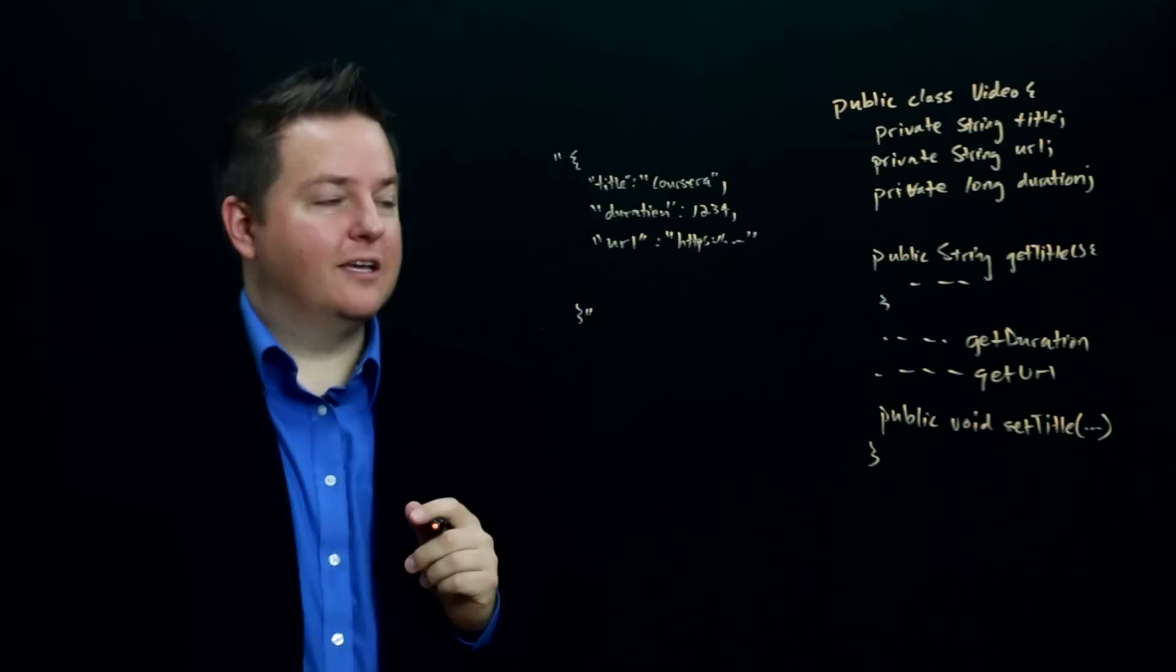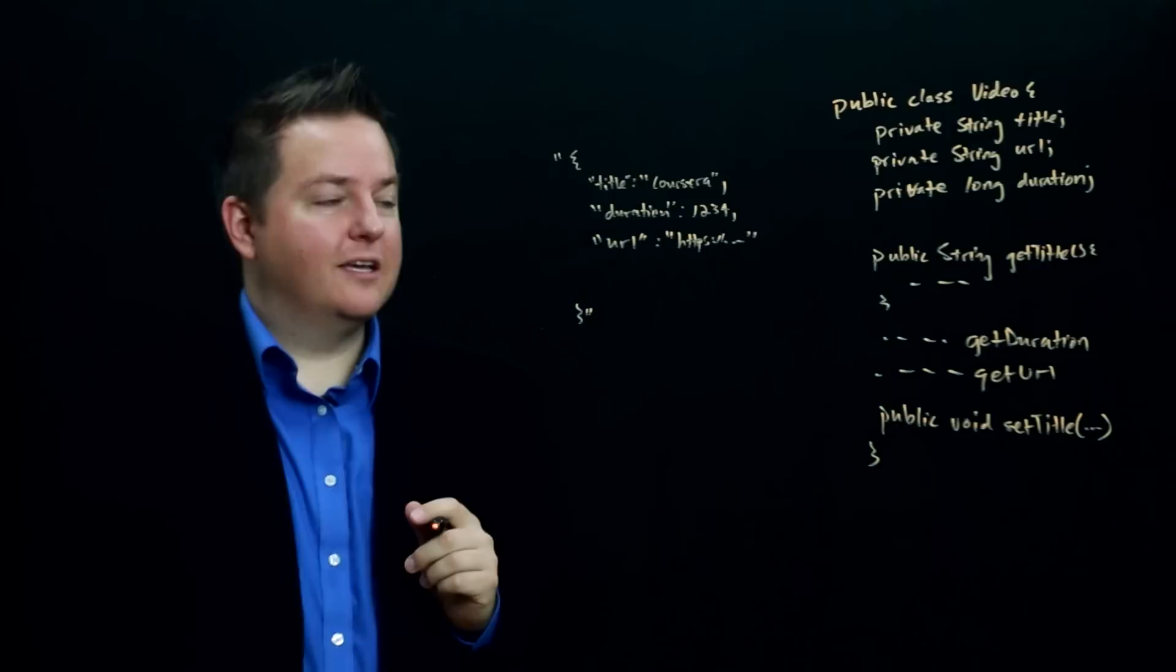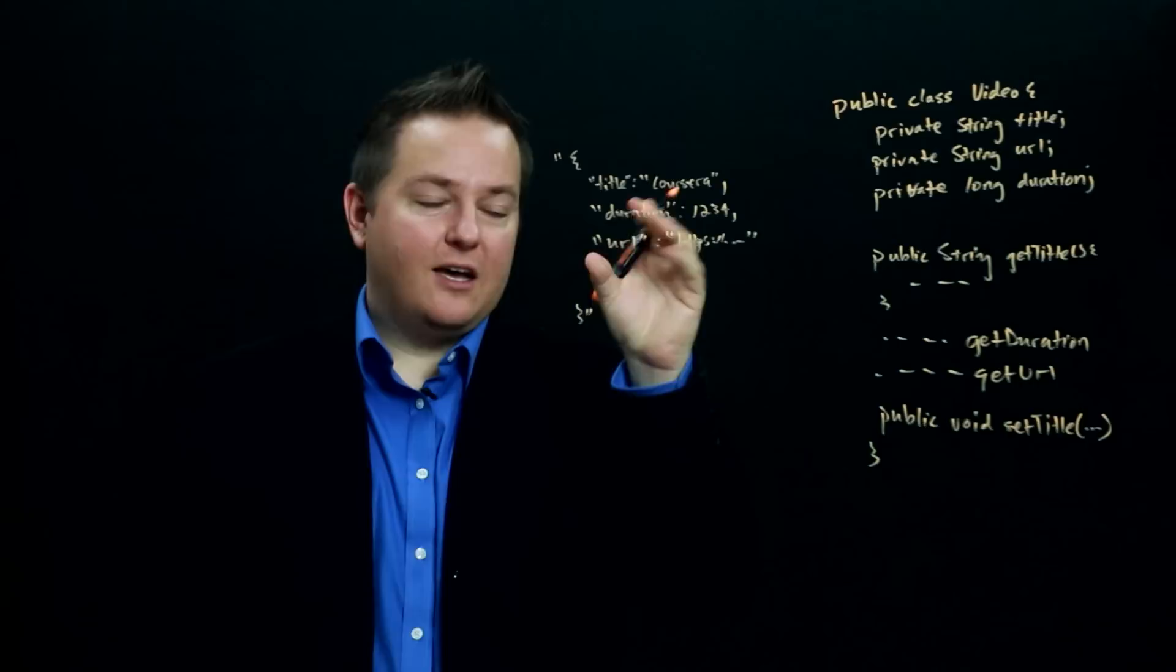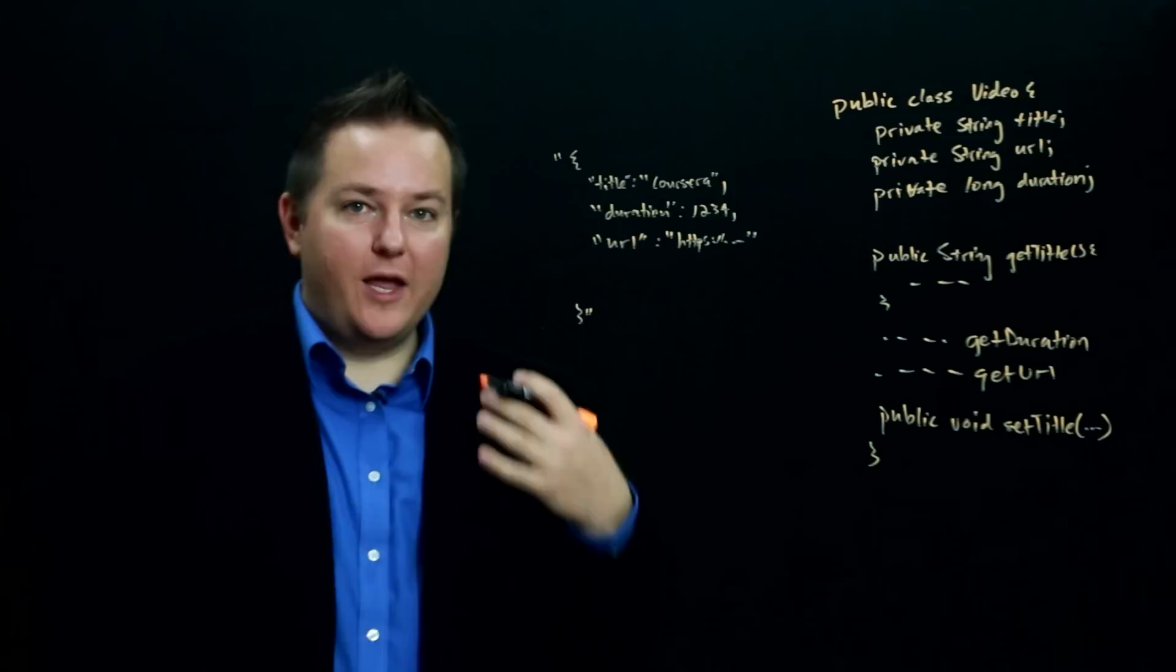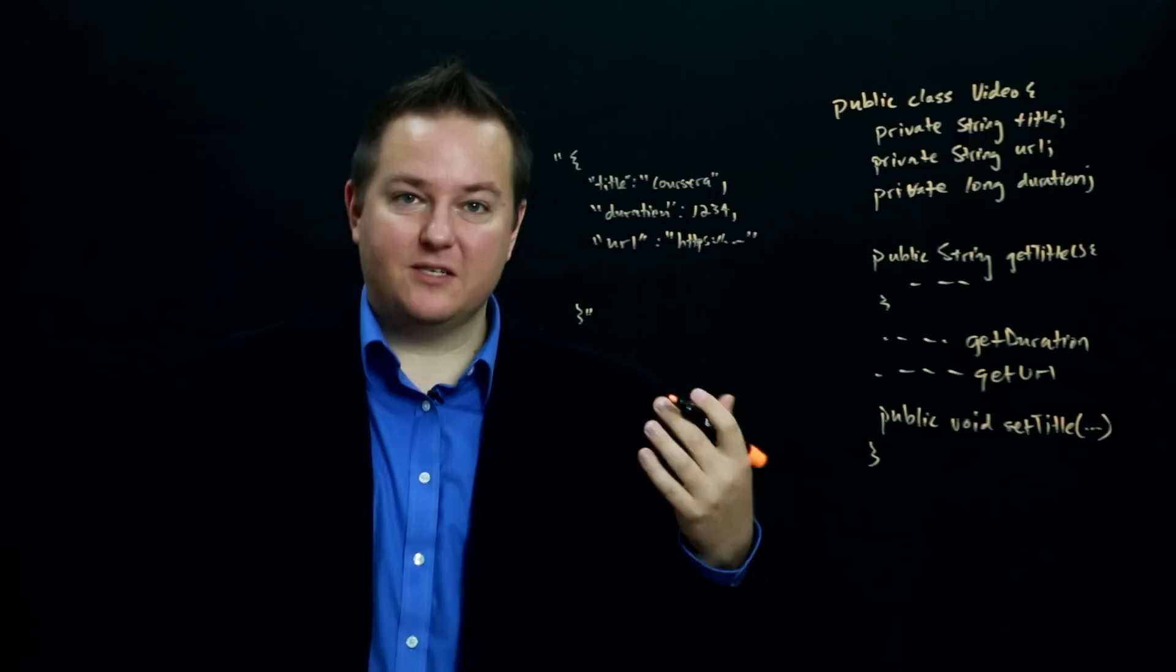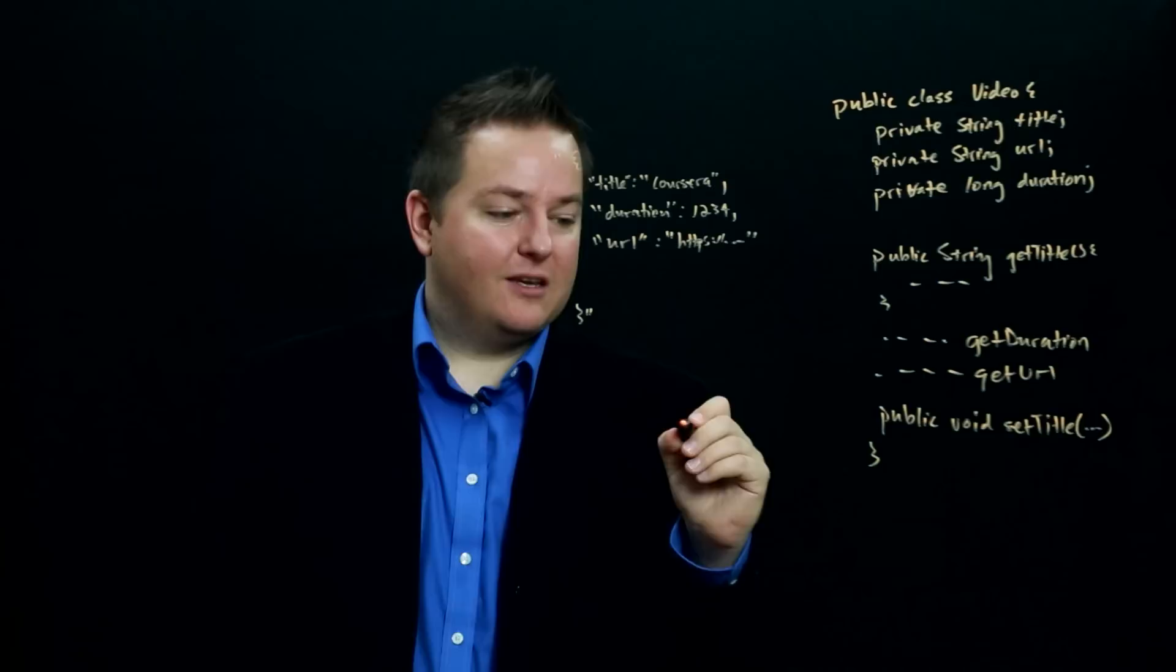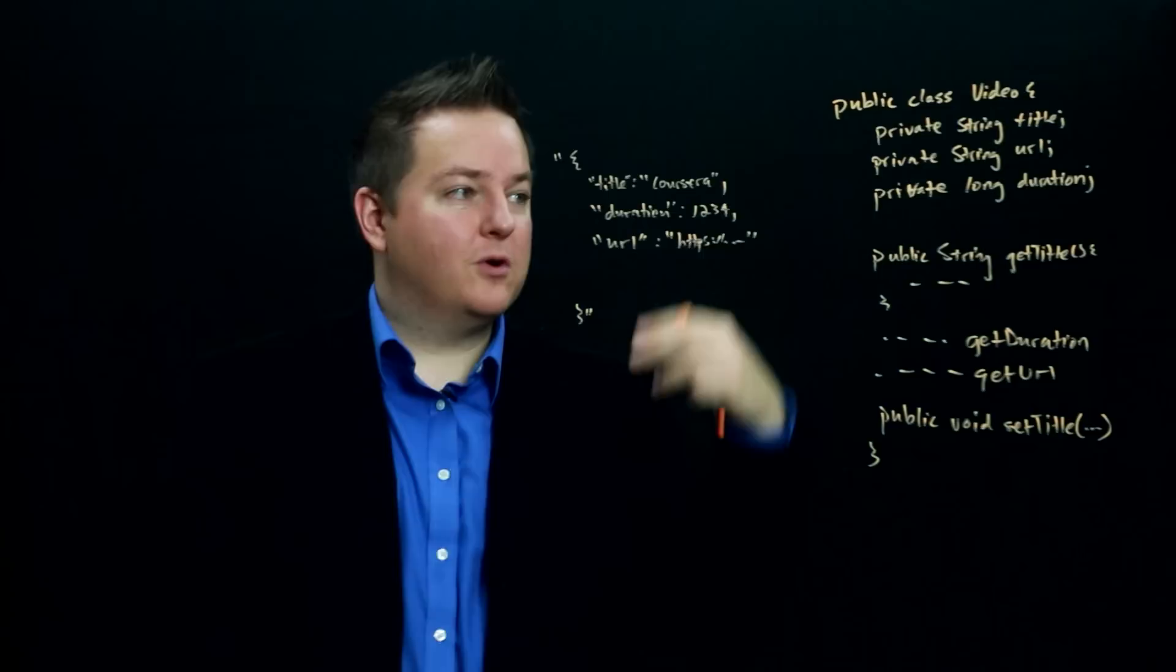What Jackson does is by default you can tell it to go and convert JSON into instances of a particular class. So in this case we can convert this JSON into an instance of video. And the way that Jackson does this is first, by default, it expects video to have a constructor that takes no arguments so that it can construct a new instance. So what Jackson is going to do is it has a method called readValue that will basically take this, it will call the constructor for video, it will create a new video object and then it will call,